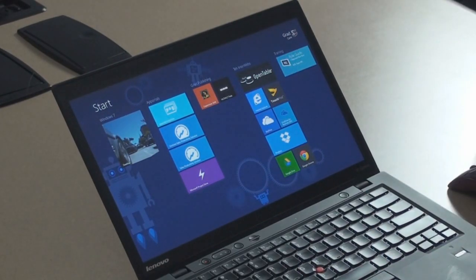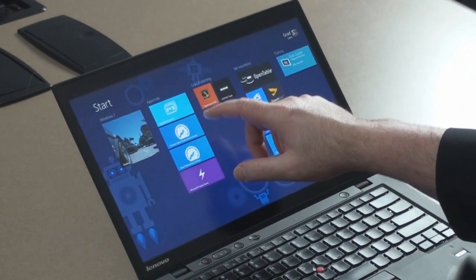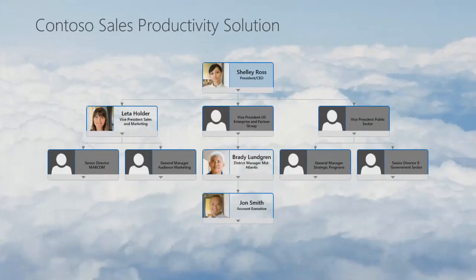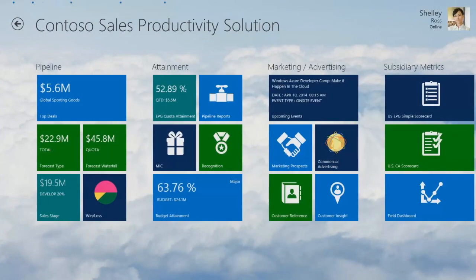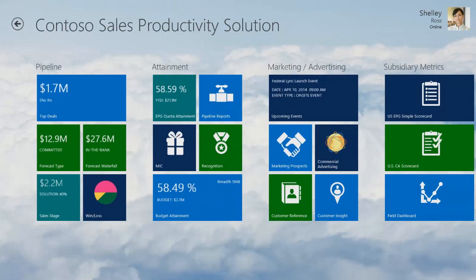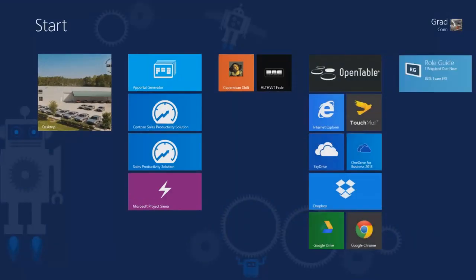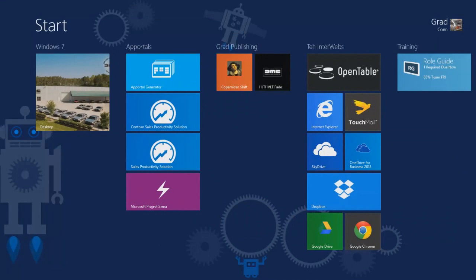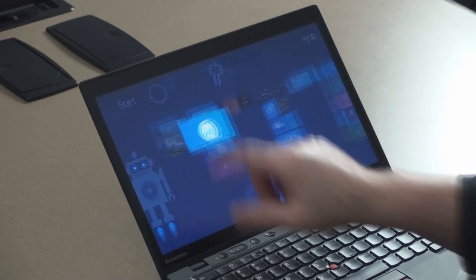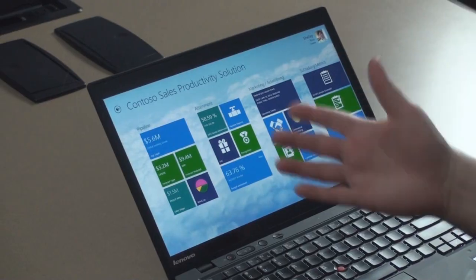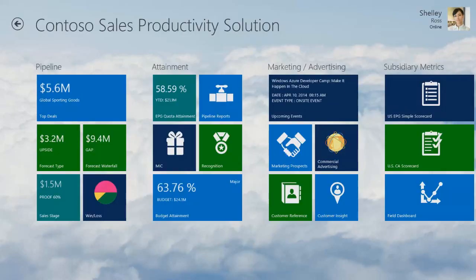I'm going to use a demo app portal we've built called Sales Productivity Solution. I can choose a persona — I'm going to choose Shelly. I'll come back to the personas in a few minutes and talk about why that's important. As you can see, this is effectively a set of live tiles that are underneath that live tile I went to a minute ago. Back on my start screen, I click on this live tile and I go into another set of live tiles, and I can click on those live tiles and go into yet another set. We're able to nest live tiles within live tiles and effectively use the OS to create a line of business application.